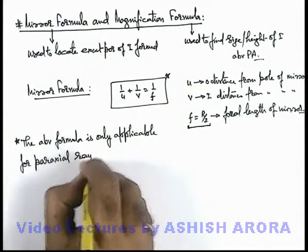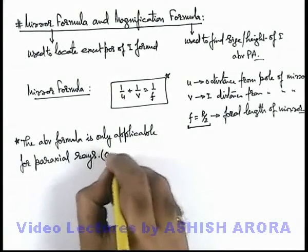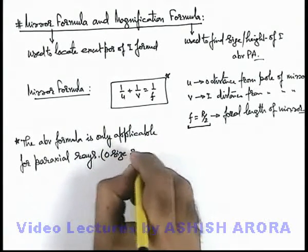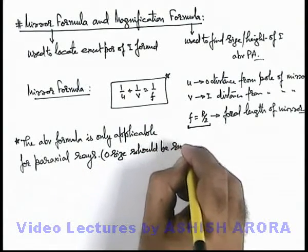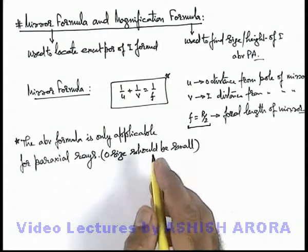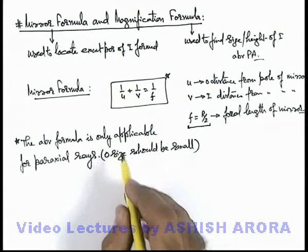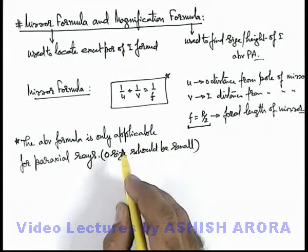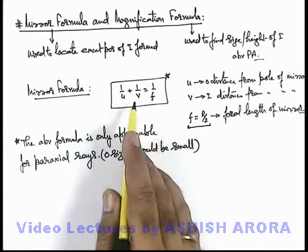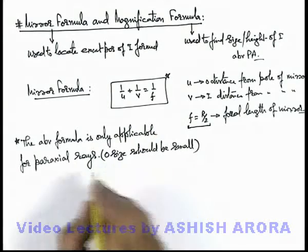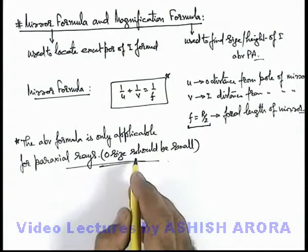If we talk about paraxial rays, that means the object size must be very small. Object size should be small because if object is large size and placed on principal axis, then those points of objects which are far away from principal axis, the rays from those points cannot be considered as paraxial rays. So the formula cannot be directly applied. You must be very careful about it that the above formula we use only for paraxial rays.